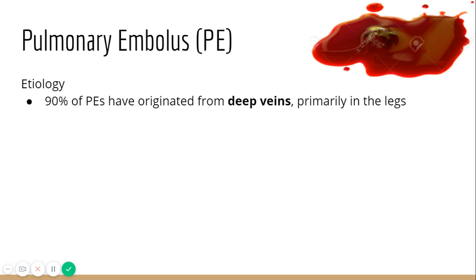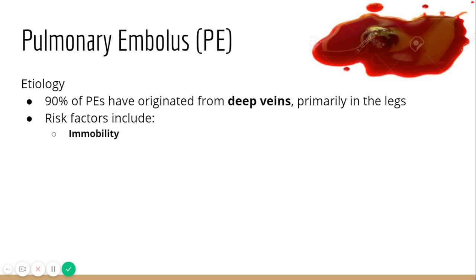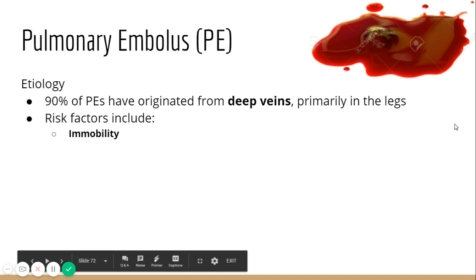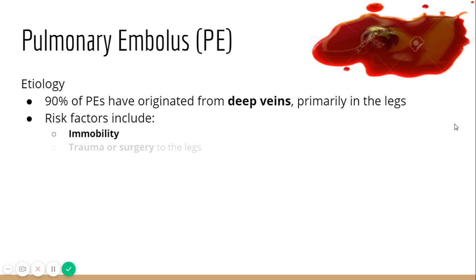90% of PEs originate from DVTs, mostly from the legs. Risk factors include immobility — patients who cannot move around have blood that pools and sits still, which causes clotting. We want to keep these individuals moving, or use other techniques to prevent clot formation in patients who physically cannot get up and move.